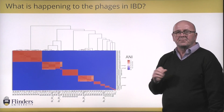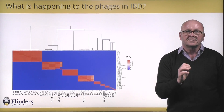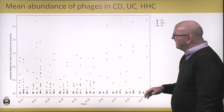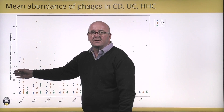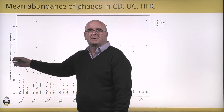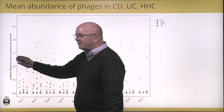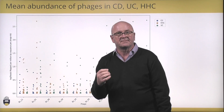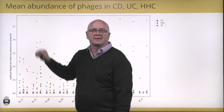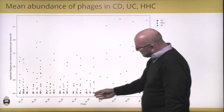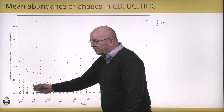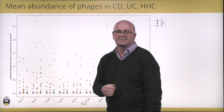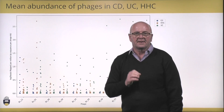We can take these phages and interrogate them by asking how abundant they are in our metagenomes. I've plotted the log of the reads mapped to each phage genome, normalized by the size of the metagenome — reads mapped per million bases sequenced — and also normalized by the size of the phage, giving reads per million bases sequenced per kilobase of phage DNA. Phages are along the bottom; in blue are samples from Crohn's disease, in green are ulcerative colitis, and in brown are the healthy household controls.